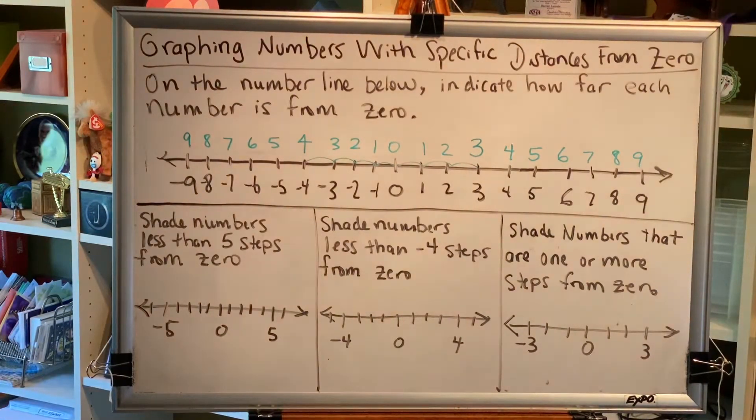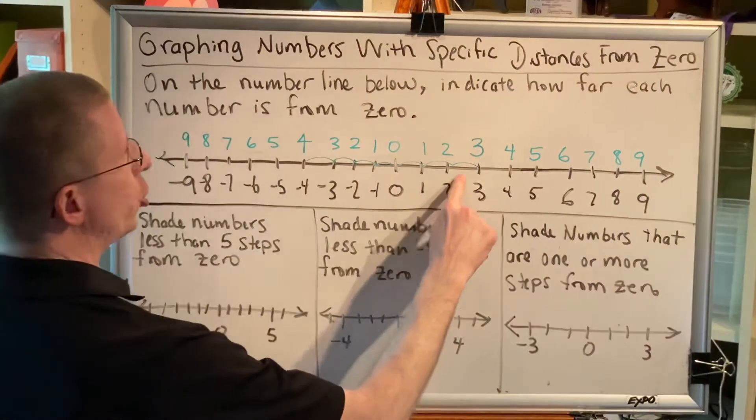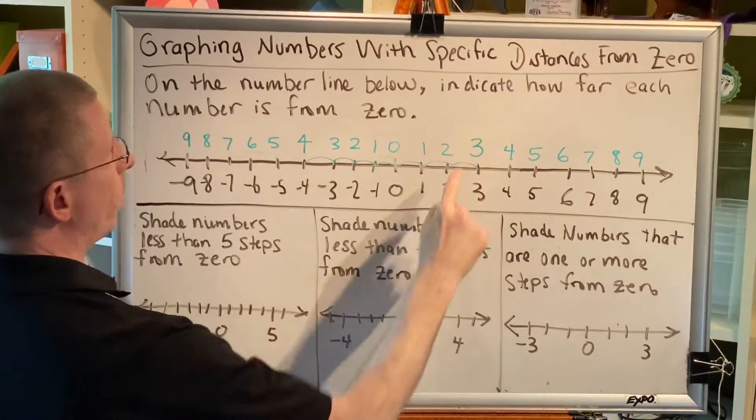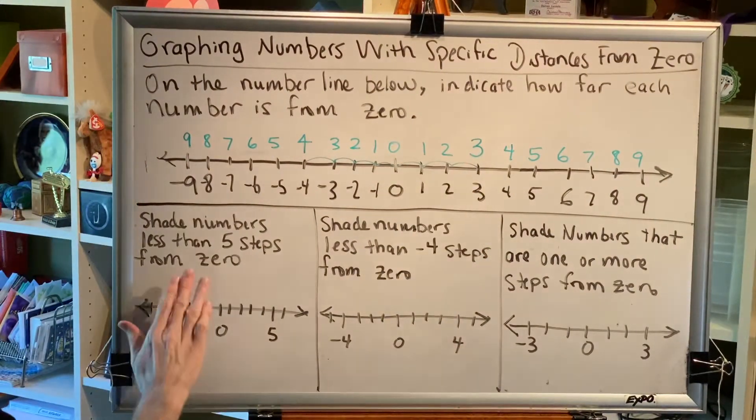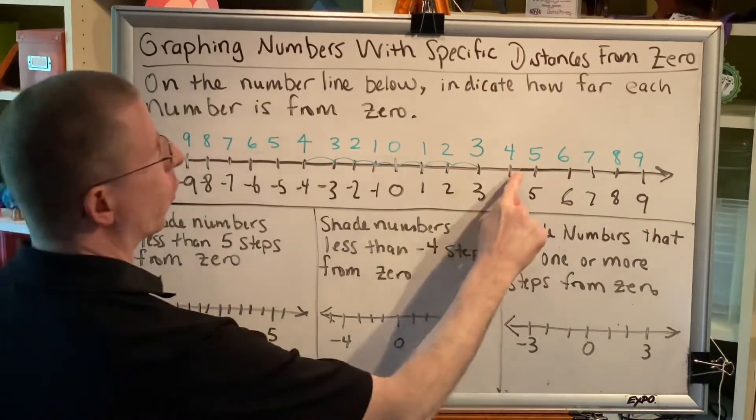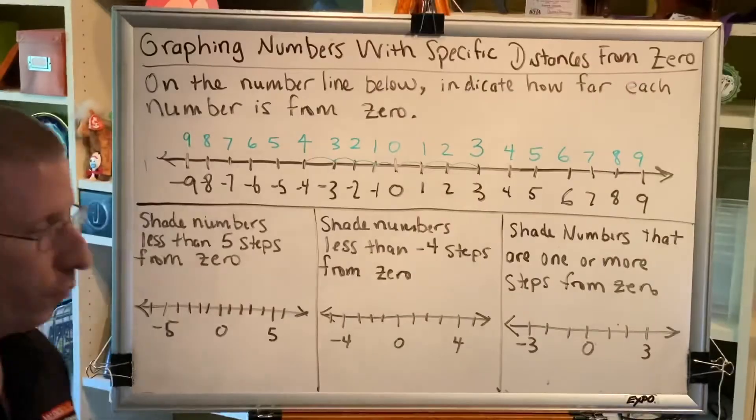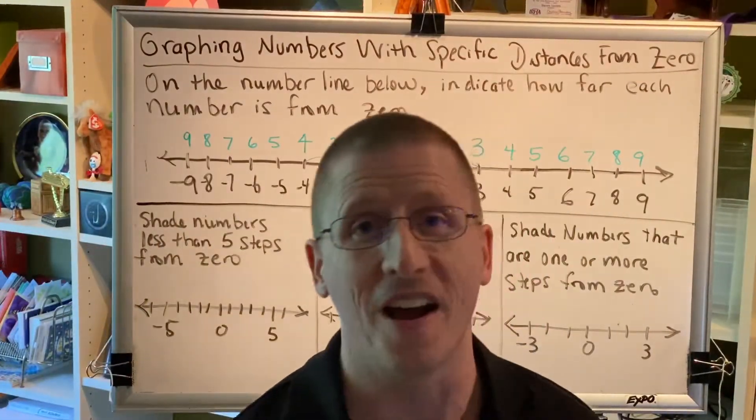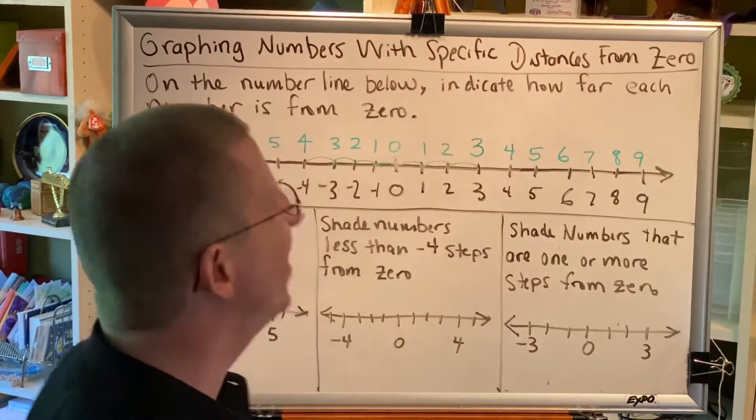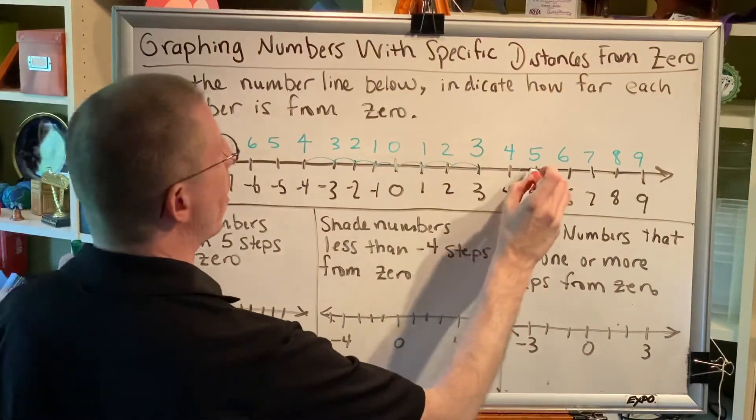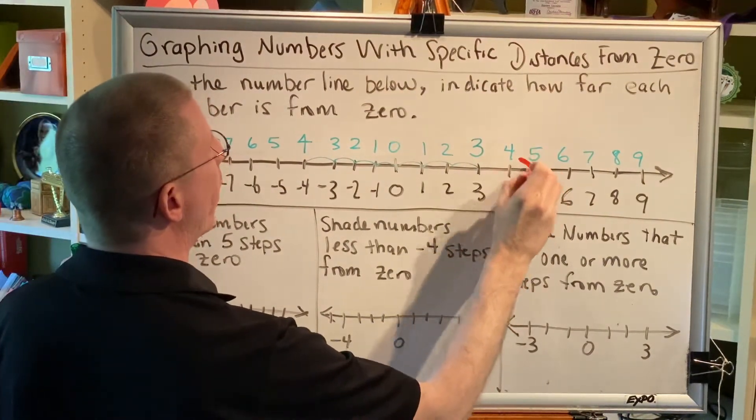There are also numbers in between the numbers. For example, 2.5 is 2.5 steps from zero, and that is also less than 5. And so is 4.5, 4.7, 4.9, 4.99, 4.999, 4.9999. In other words, about as close as you can get to 5 without actually touching it.